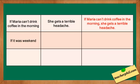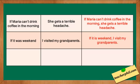The fourth one: if it was weekend, I visited my grandparents. The correct answer is: if it is weekend, I visit my grandparents. The clauses here are both in simple past. Again, it must be in present simple — that's why we have: if it is weekend, I visit my grandparents.